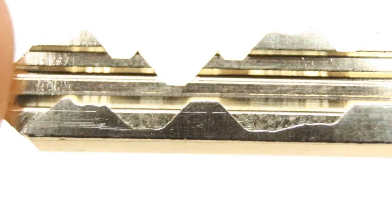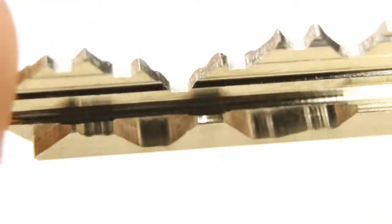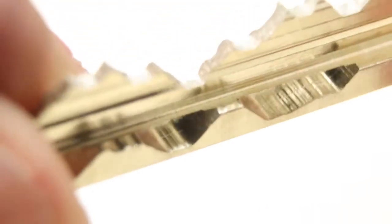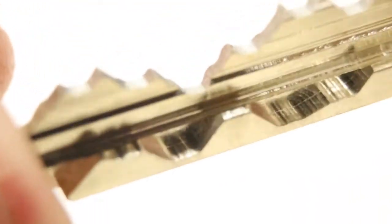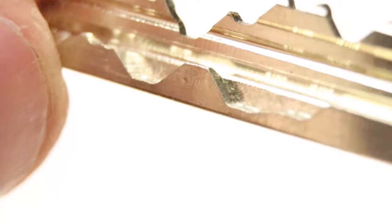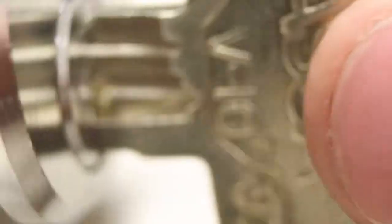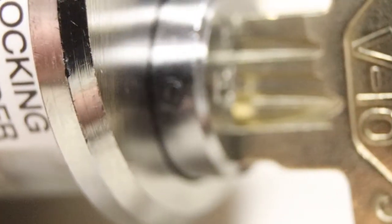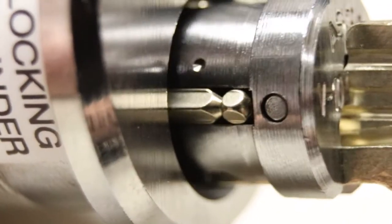Now here we have one of the keys, and you can immediately see that in addition to the traditional cuts on the top, there's a side milling which the ASA factory pre-cuts. And here I have a cylinder. That side milling interferes with five side pins.